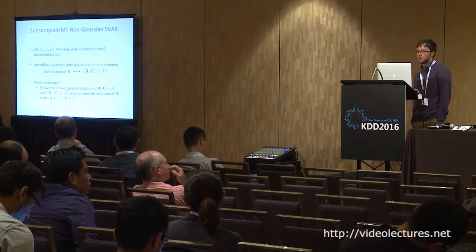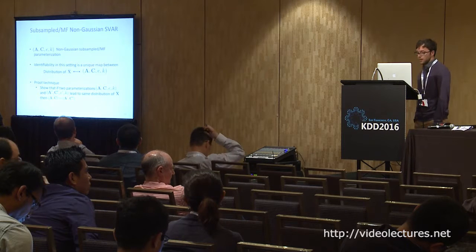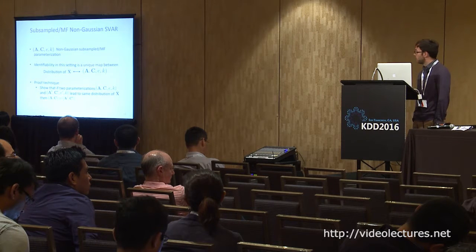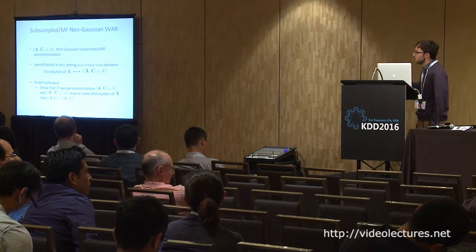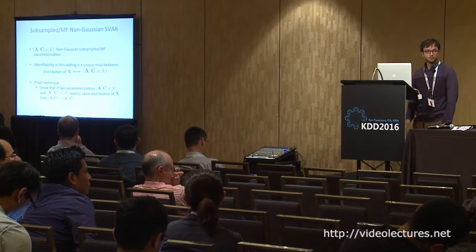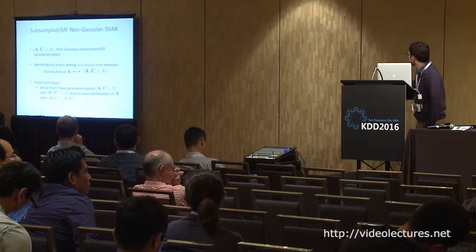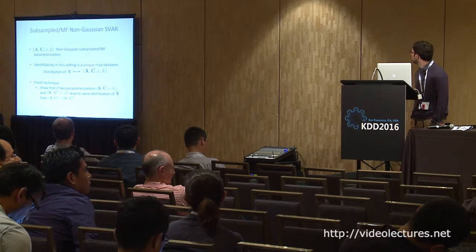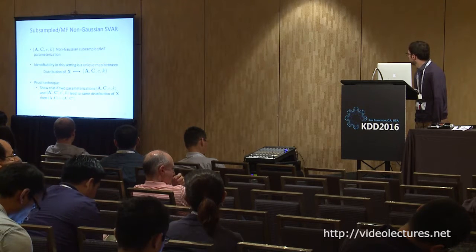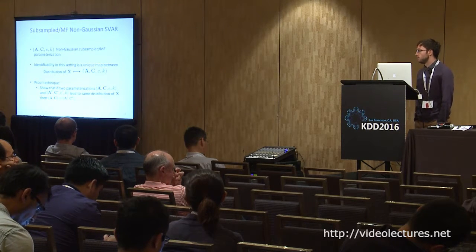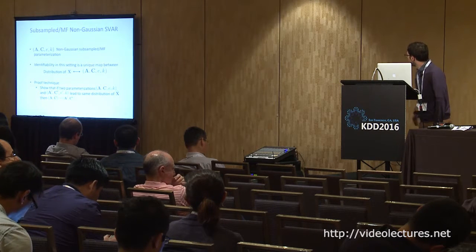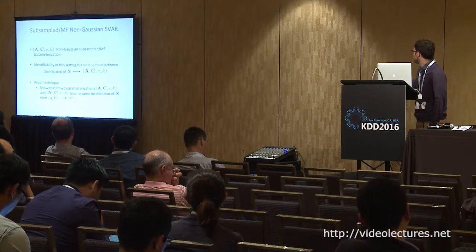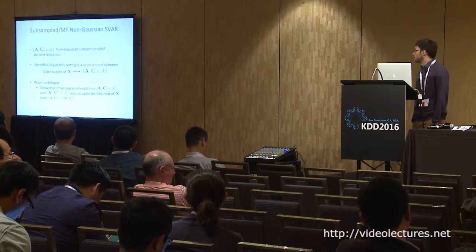In the subsampled case, we refer to a parameterization as the collection (A, C, E, K), where A and C are the model parameters, E is the error distribution, and K is the subsampling rate — which can be a vector for mixed frequencies. Identifiability is a map between the joint distribution of observed data X̃ and this representation. The general proof technique is to show that if two parameterizations (A, C, E, K) and (A', C', E', K) lead to the same distribution of X, then the two parameter sets must be equal.